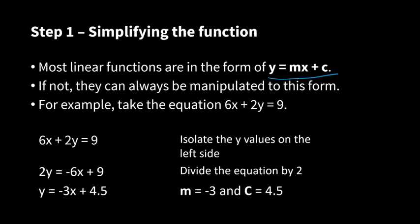Let's take the equation 6x plus 2y equals 9. You can isolate the y values on the left side to get 2y, and 6x to the right, and then divide the equation by 2 to get y equals minus 3x plus 4 and a half. Everything is divided by 2. Now, you have m, which is minus 3, and c, which is 4 and a half. Then, you can work and try to recognize the function.